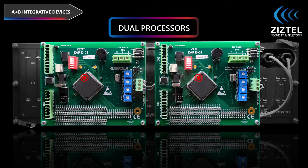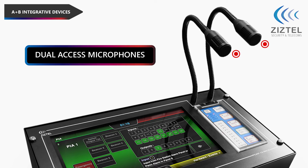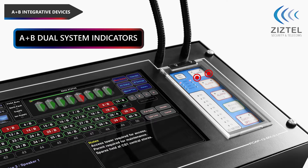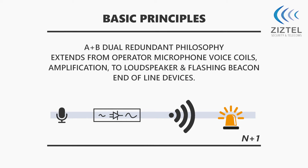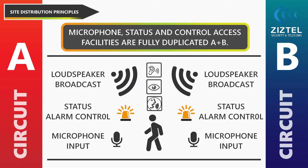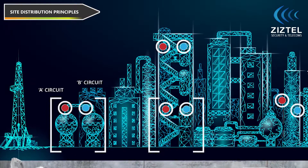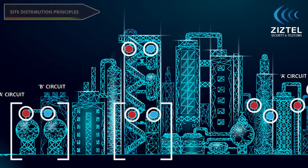The second aspect of A/B integrity relates to site installation principles. Microphone input status and control access facilities are fully duplicated. A/B dedicated A/B circuits have coverage to serve the same area where personnel occupy, according to prior acoustic site study.